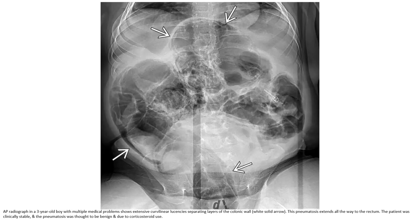AP radiograph in a three-year-old boy with multiple medical problems shows extensive curvilinear linear lucency separating the layers of the colon wall. This pneumatosis extends all the way to the rectum. The patient was clinically stable, and the pneumatosis was thought to be benign and due to corticosteroid use.